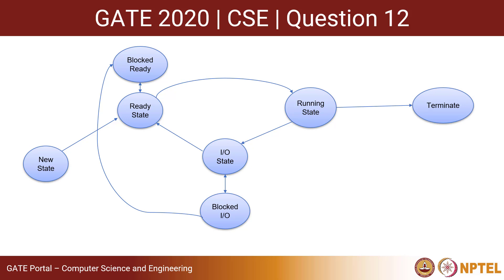This transition diagram shows the working for non-preemptive scheduling. Now, the question asks about preemptive scheduling. Preemptive scheduling is normally used for multitasking purposes. In preemptive scheduling, the process which resides in the running state can also come back to the ready state.